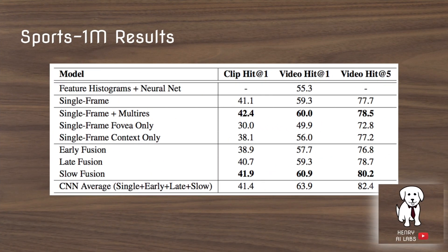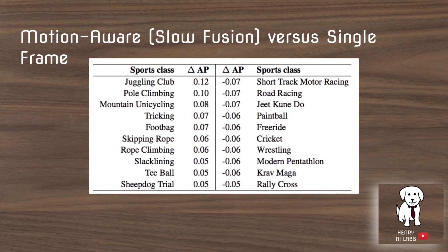These are the results the different models achieve on the Sports-1 Million dataset. The CNN is able to outperform the feature histograms. However, the different spatial temporal models don't really seem to differ from each other too much. Looking at specific classes where spatial temporal models outperform single frame models, it suggests that intraclass variance is influential on whether or not the temporal features are useful.